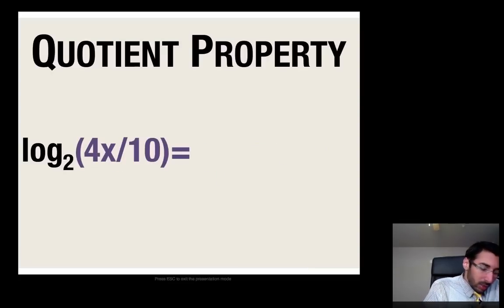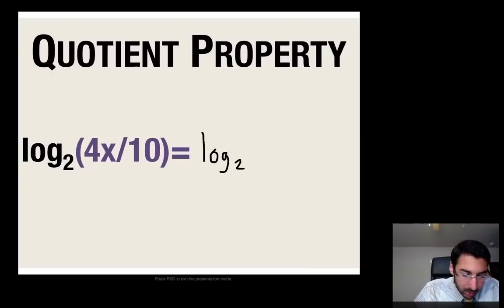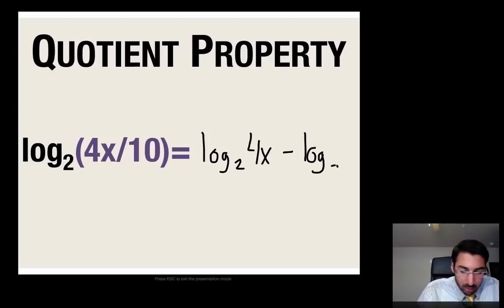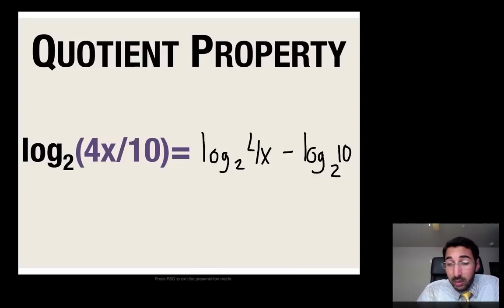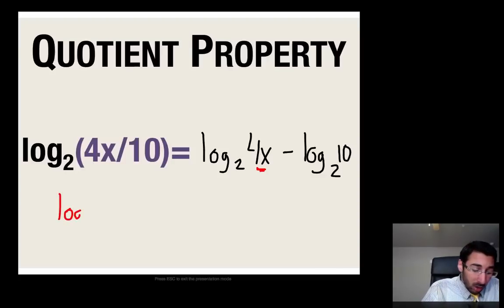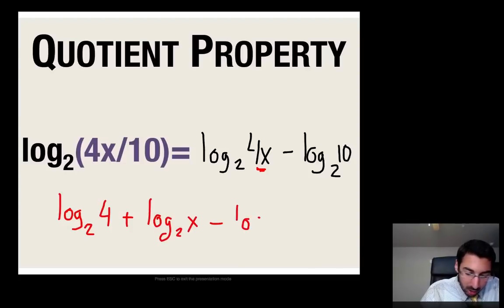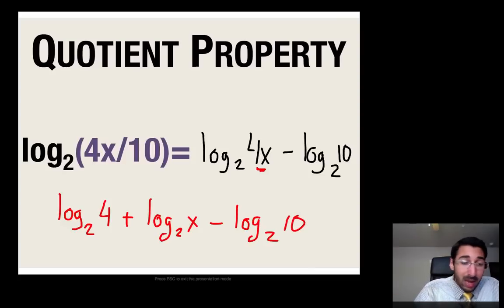So I have log base 4 of x divided by y. I'm going to break this up into log base 4 of x minus log base 4 of y — just like the product rule, but using subtraction because of the division. Let's try another: log base 2 of 4x divided by 10. That breaks into log base 2 of 4x minus log base 2 of 10. If I wanted to break it down even further, I notice that 4 and x are being multiplied, so I could do log base 2 of 4 plus log base 2 of x minus log base 2 of 10. That would be the fully expanded form.